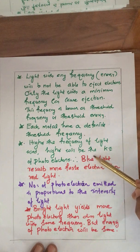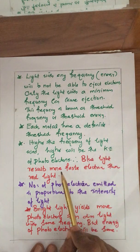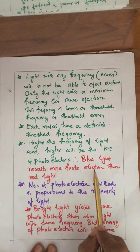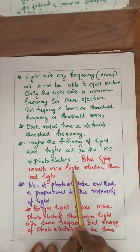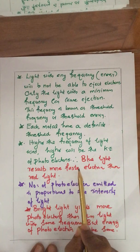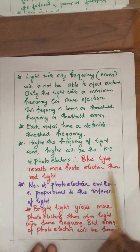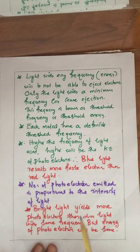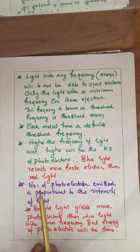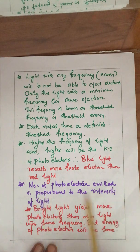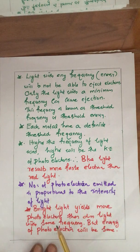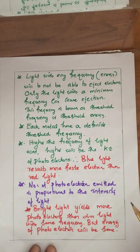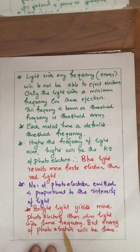Therefore, when comparing blue light and red light — blue light has higher frequency and higher energy — blue light produces faster electrons, meaning the kinetic energy of those electrons will be higher than with red light. The number of photoelectrons emitted is proportional to the intensity of light — as the intensity increases, the number of photoelectrons emitted also increases.